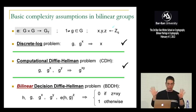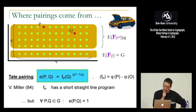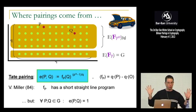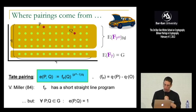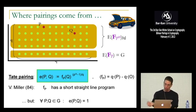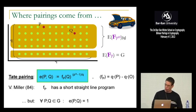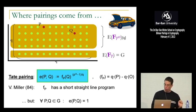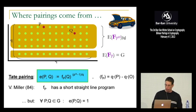Now I want to explain where pairings come from using pictures — no math. The group of points of an elliptic curve E(F_p) — the group over the finite field F_p — has Q points. In the math world, these are called Q-torsion points because they have order Q. If you go to an extension field F_{p^α}, more points of order Q appear. There are exactly Q² such points forming a two-dimensional grid — the Q-torsion subgroup with structure Z_Q × Z_Q.